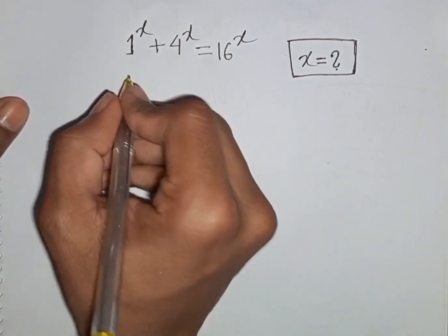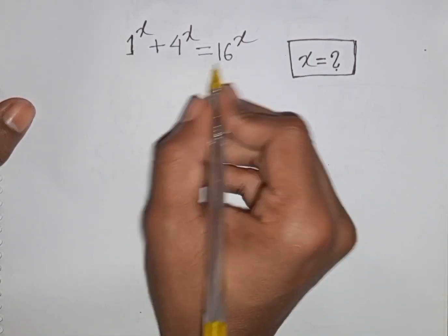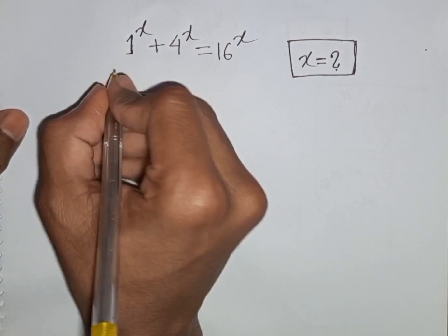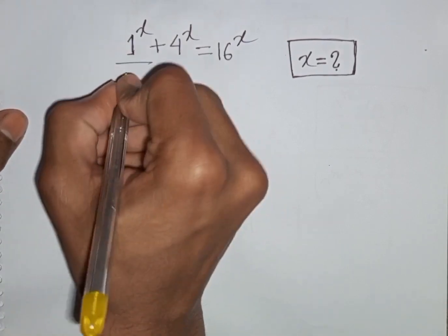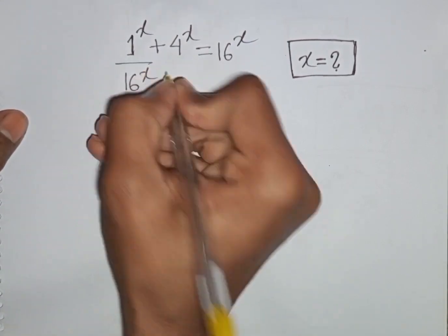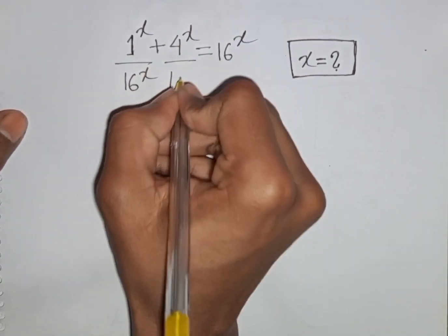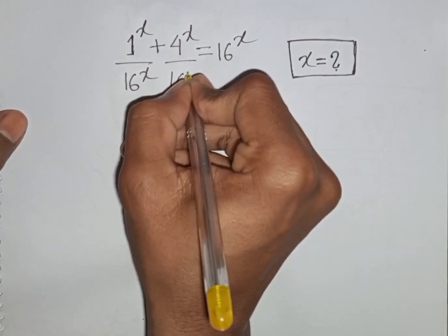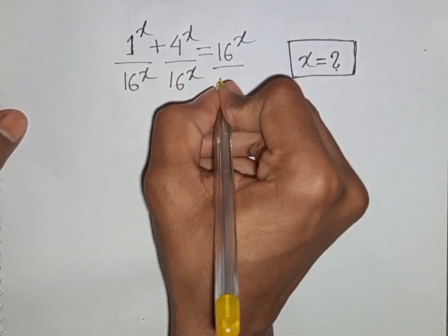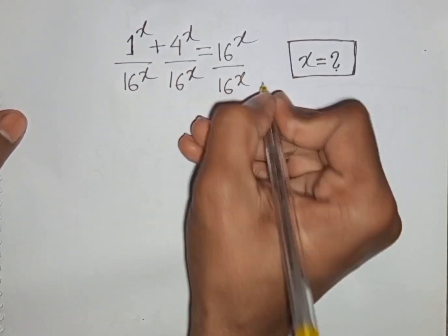Find the value of x. First, we divide both sides by 16 to the power x.